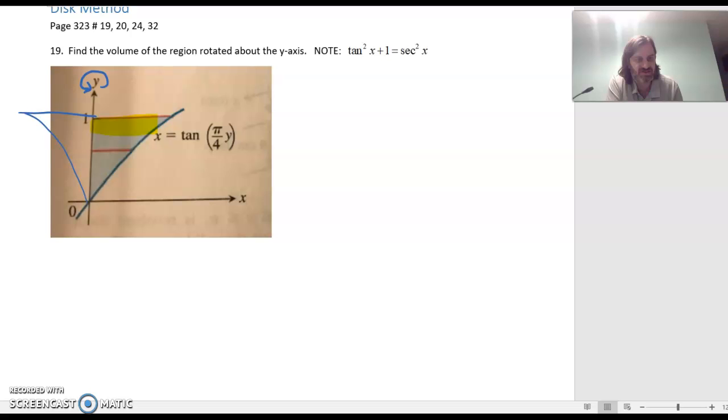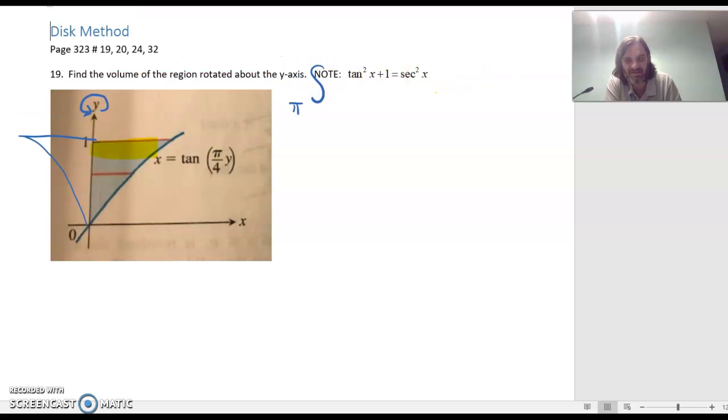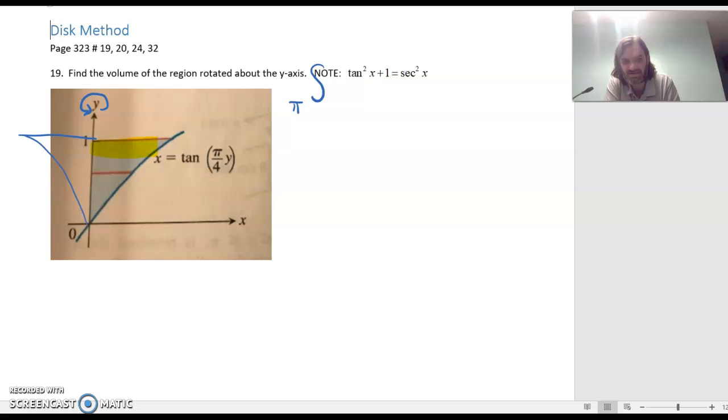If we're going to use disk method and rotate around the y-axis, we're going to put everything in terms of y. The volume will be pi times the integration, and the y limits of integration here look like it's going to go from 0 at the bottom up to 1 at the top.